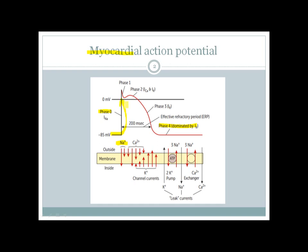After the rapid upstroke there is a period of rapid repolarization, which occurs due to efflux of potassium ions from inside the cell to outside. This outward potassium current is balanced by an inward current of calcium, creating a plateau known as phase two. After some time the inward calcium current tapers off and the potassium current gradually increases, making phase three mediated by efflux of potassium ions.